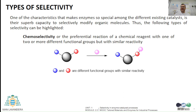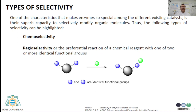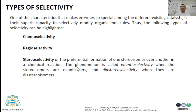Among the different types of selectivities that enzymes can perform, it can be highlighted chemoselectivity, which is the ability to differentiate two or more reactive groups but with similar activity against another reagent. Regioselectivity, which stands for the selective transformation of a chemical reagent with one of two or more identical functional groups. And finally, stereoselectivity, which is related to the different reactivity of one stereoisomer with regards to others.